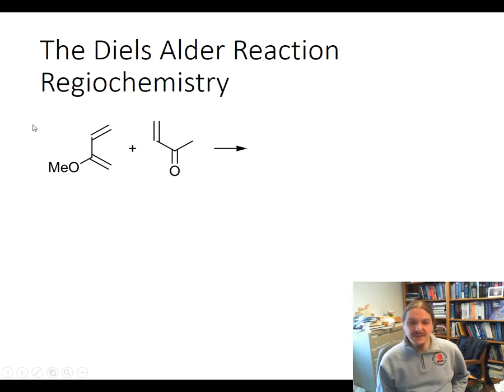So as a way of an example, let's consider this reaction here between 2-methoxy-1,3-butadiene as a diene and methylvinyl ketone or 3-butene-2-one.